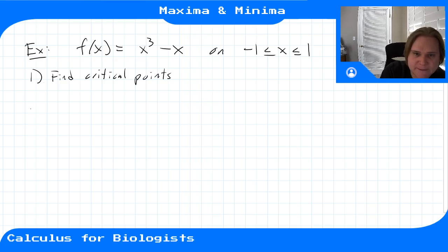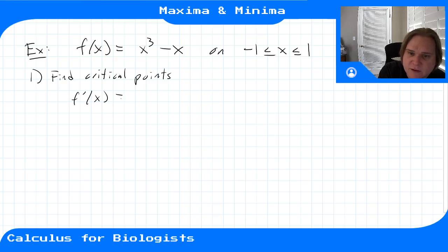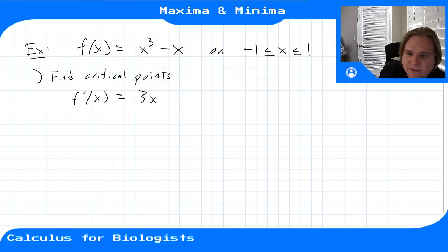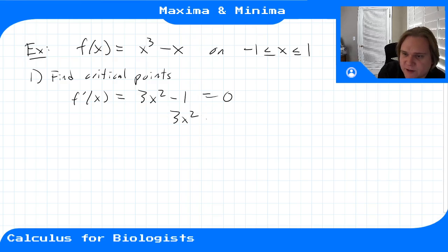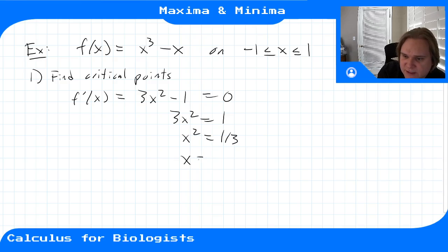We find f'(x), which by the power rule is 3x² - 1, and look for where this equals zero. So 3x² = 1, giving x² = 1/3.